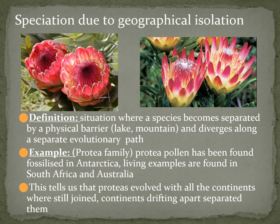Now, why do we need to know this? Effectively, it tells us that proteas evolved when all of the continents were still joined together, and then when they drifted apart, that separated them. In other words, the main protea family would have evolved all together at the same time, because they look far too similar to have evolved separately for hundreds of millions of years. Rather, they evolved up until a point, and then when the land masses broke apart they followed their own evolutionary pathways, but with very little changes, even though the geographical location, temperature, and other factors changed.